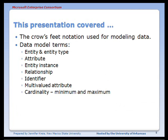So we've covered entity, entity type, attribute, entity instance, relationship, identifier, multi-valued attribute, and introduced the idea of cardinality — minimum and maximum constraints on a relationship.